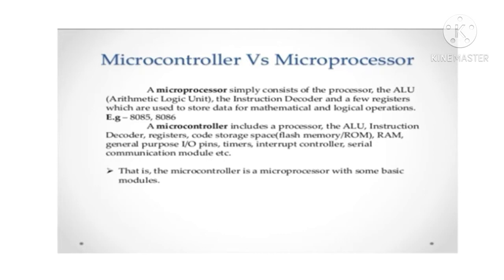A microprocessor simply consists of the processor, the ALU (Arithmetic Logic Unit), the instruction decoder, and a few registers which are used to store data for mathematical and logical operations. The microcontroller includes a processor, the ALU, instruction decoder, registers, code storage space, flash memory or ROM, general purpose input/output pins, timer, and interrupt controller.